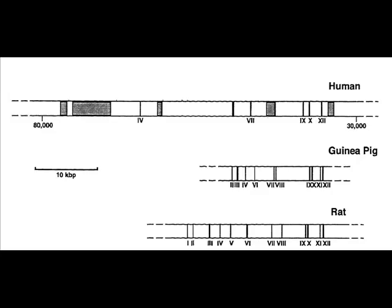Some creationists have actually claimed that since some of the same pieces are missing in both primates and guinea pigs, that this is evidence of common design. Though some of the same sequences are deleted, there are more deleted from the primate sequence, and these are shared by monkeys, apes, and humans, but not guinea pigs. As you can see in this figure, the primates are missing the coding regions 1, 2, 3, 5, 6, 8, and 11, while guinea pigs are only missing 1 and 5.